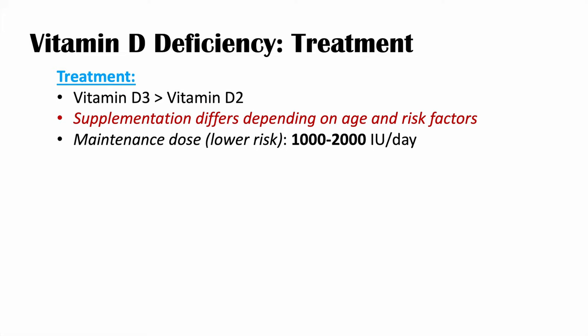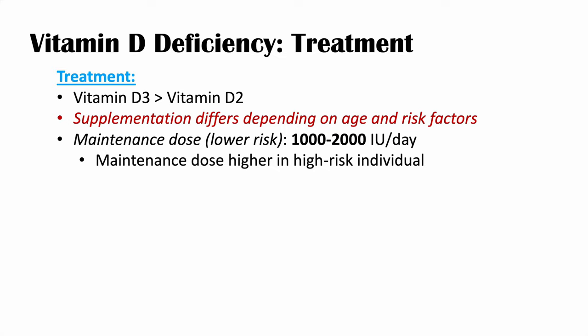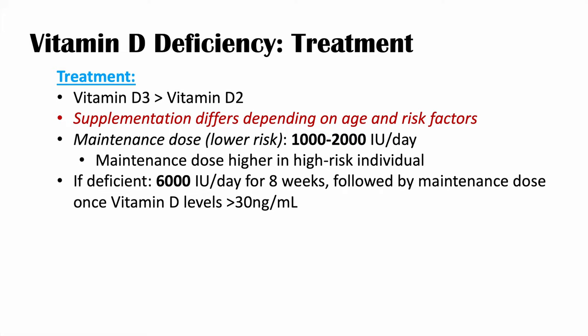The maintenance dose is likely higher in high-risk individuals — as high as 3,000 to 4,000 international units per day — including darker-skinned individuals and people who are overweight or obese. When an individual has vitamin D deficiency, it is generally recommended to give 6,000 international units per day for eight weeks, followed by a maintenance dose once vitamin D levels reach at least 30 nanograms per milliliter. Some high-risk deficient individuals may need even higher levels for a shorter period.